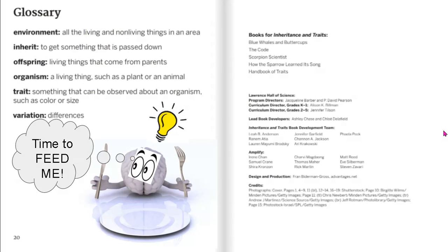Glossary — time to feed your brain dictionaries! Environment: all the living and non-living things in an area. Inherit: to get something that is passed down. Offspring: living things that come from parents. Organism: a living thing, such as a plant or an animal. Trait: something that can be observed about an organism, such as color or size. Variation: differences.